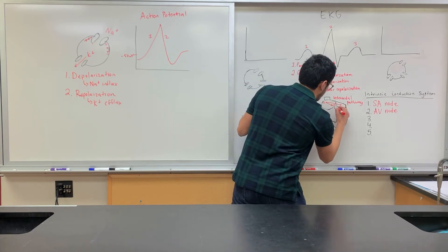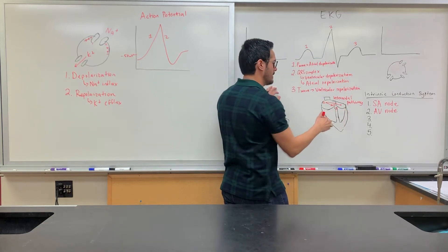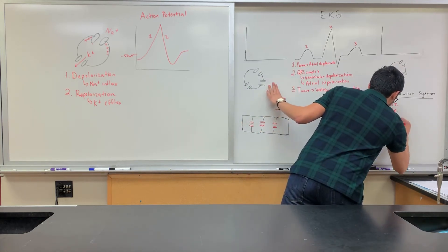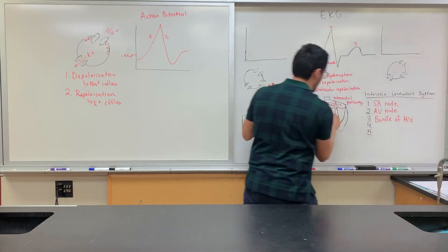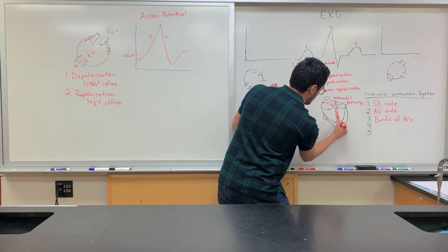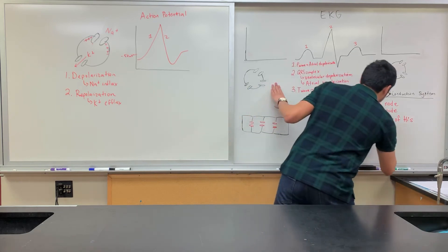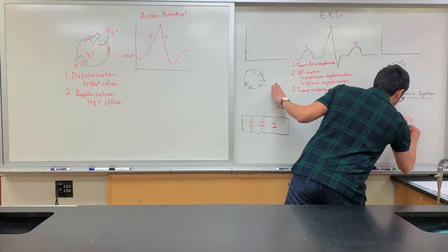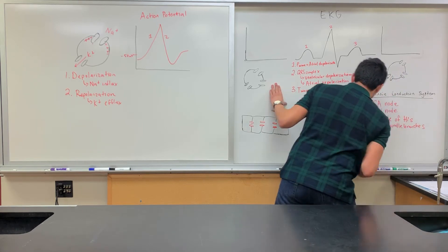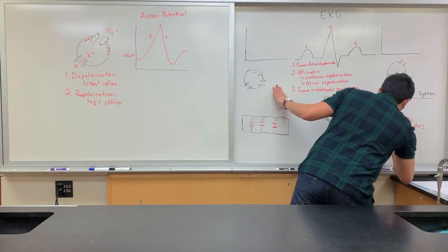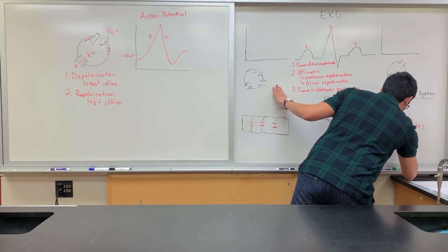The muscle is not going to contract until after we get the signal. The SA node sends the signal to the AV node. Then what's number three, which is here at the top? It's part of the interventricular septum. The bundle of His. So you have the bundle of His. Then number four, coming all the way down here. This is the right and left bundle branches. And then what's found within the ventricles? This is what's known as the Purkinje fibers.